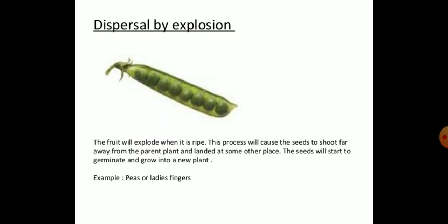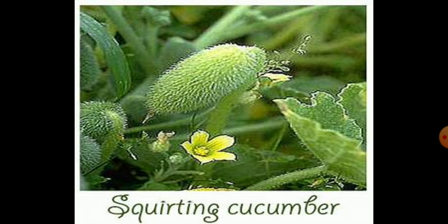In the case of pea, the fruit will explode when it ripens. This process causes the seeds to shoot far away from the parent plant and land at some other place, where the seeds will start to germinate and grow into new plants. In the case of squirting cucumber, the contents of the ripe fruit containing seeds are thrown out to a distance of several feet through a circular pore at one end. All these are examples of seeds scattered by explosion.